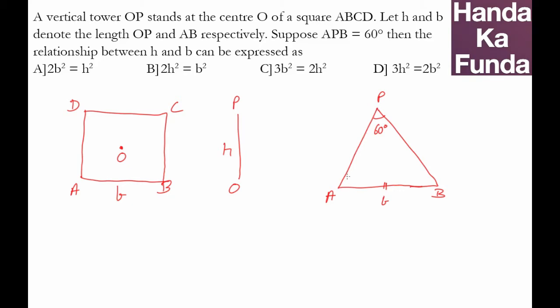Now the top of the tower, since the tower is at the center, it will be equidistant from A and B. So these two sides have to be equal, which essentially means my triangle is an equilateral triangle of side B. Now if I join OA, that is the center of the square to one of the vertices OA.